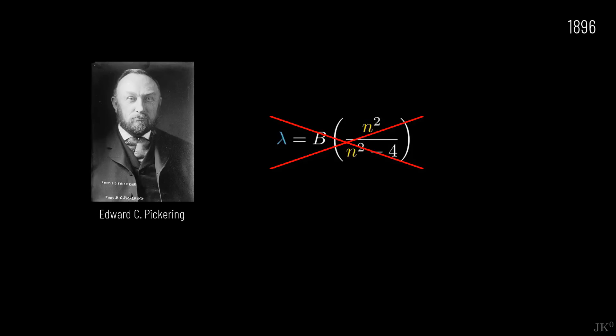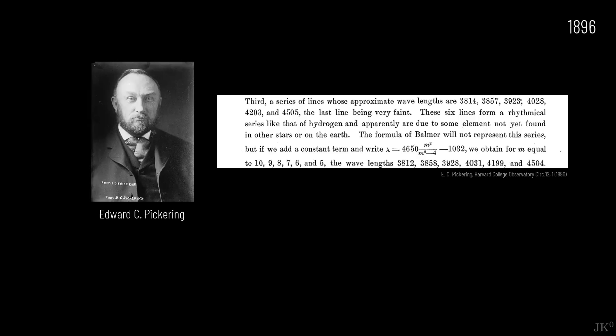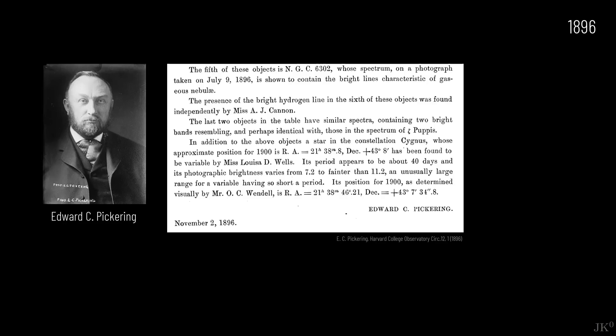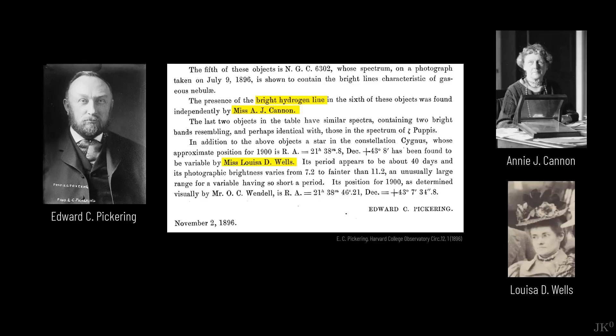After trying different methods, he gave up and simply announced in a paper that these anomalous lines just could not be explained by Balmer's formula. He also presented a preliminary new formula. In this paper, Pickering also described the strong hydrogen lines identified by Annie Cannon and Louisa Wells in the newly studied stars, as well as the pulsating period of newly discovered variable stars that would play crucial roles in the measurements of cosmological distances and the discovery of the expansion of the universe, thanks to the work of Henrietta Leavitt and Edwin Hubble.